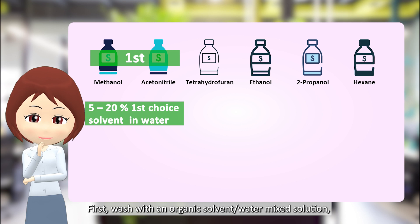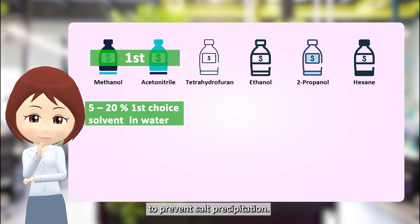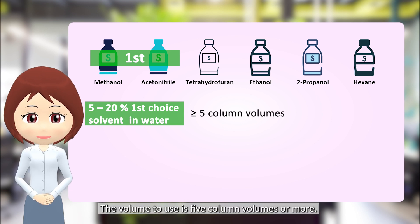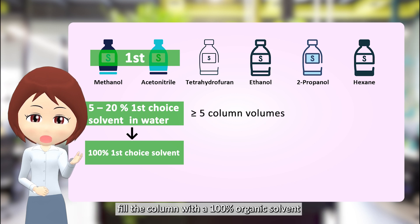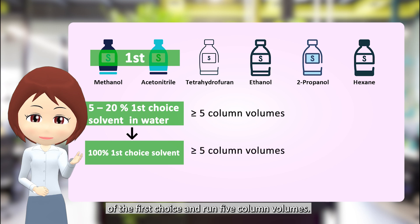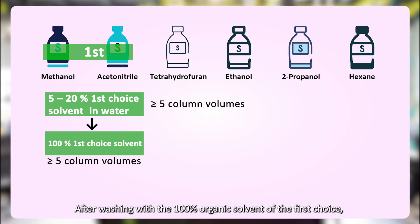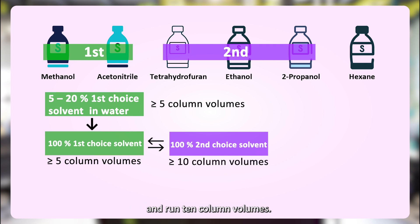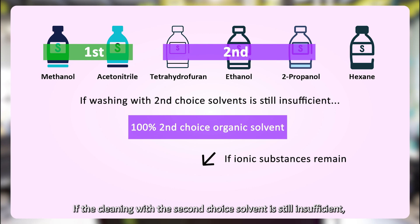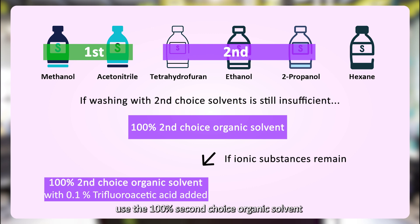For the advanced method, first wash with an organic solvent/water mixture to prevent salt precipitation, using 5 column volumes or more. After that, fill the column with 100% organic solvent of the first choice and run 5 column volumes. Then fill the column with 100% organic solvent of the second choice and run 10 column volumes. If ionic substances remain, use the 100% second choice organic solvent with 0.1% trifluoroacetic acid added to remove them.